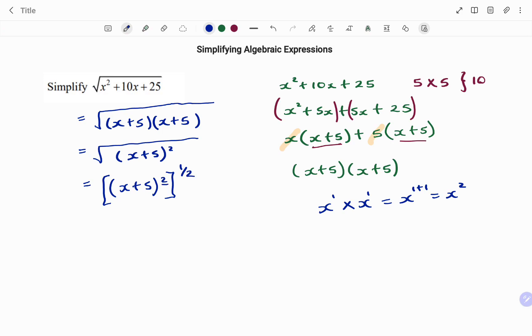But 2 is over 1, so that equals 2 over 1 times 1 over 2, which equals 2 over 2, which is 1. So my final answer is x plus 5.